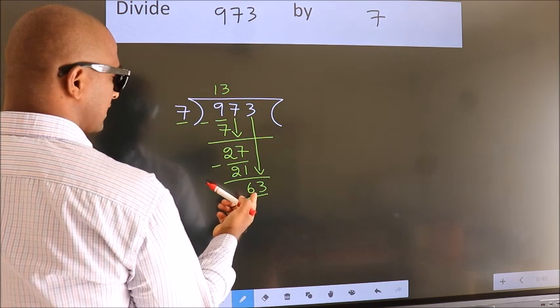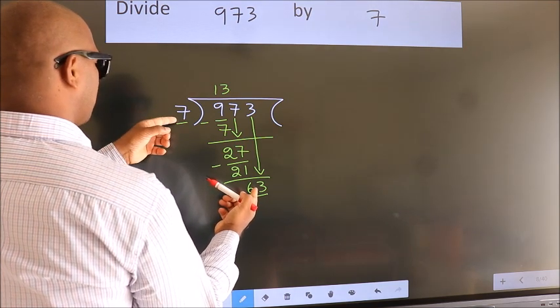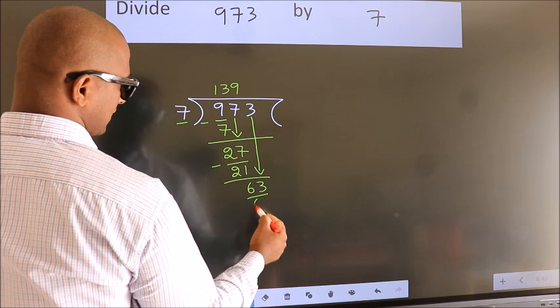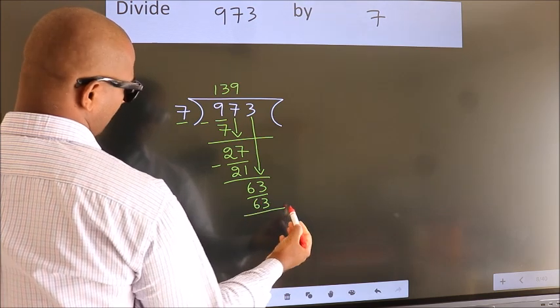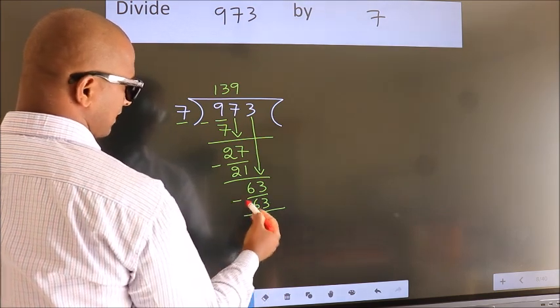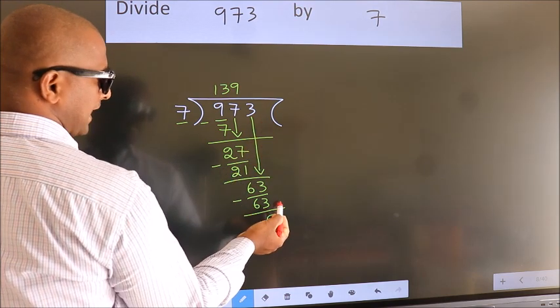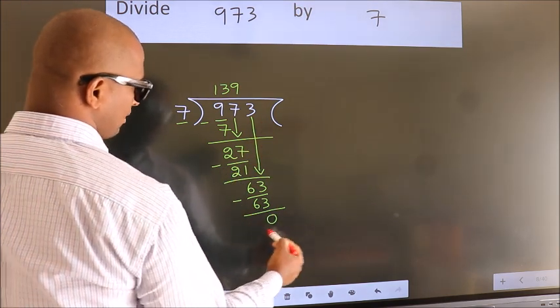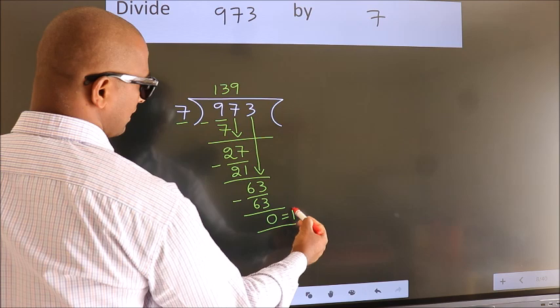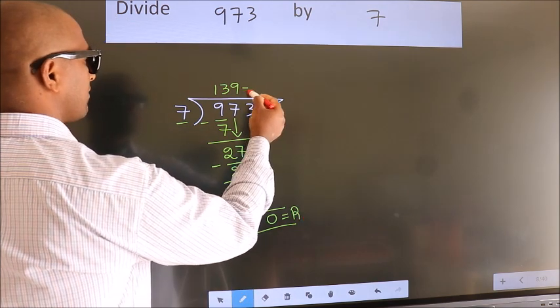When do we get 63 in the 7 table? 7 nines, 63. Now we subtract. We get 0. No more numbers to bring down, so we stop here. This is our remainder. This is our quotient.